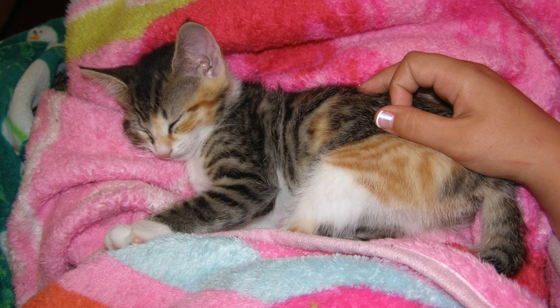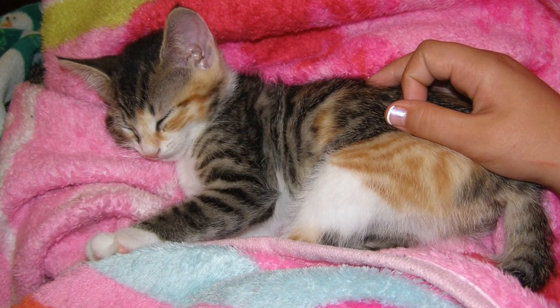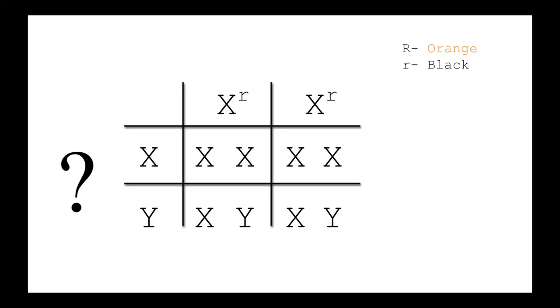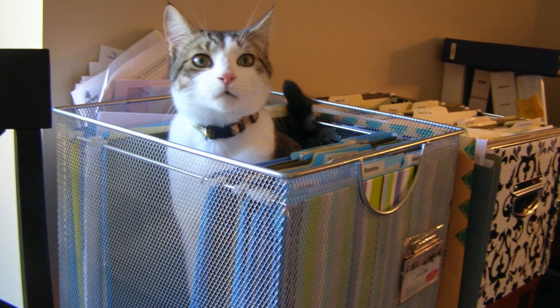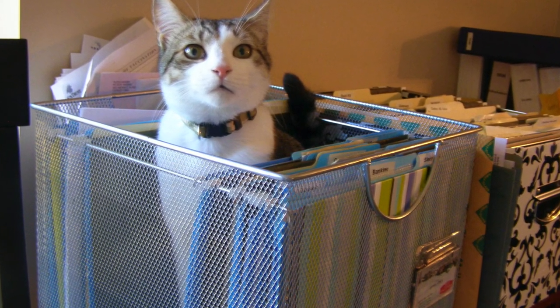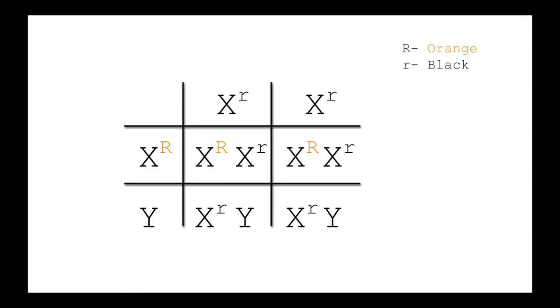Since Mittens must get one allele from mom and one allele from dad, and she has both black and orange, her genotype must be heterozygous, and the dad must have the orange allele. Now, thinking about Rhino's phenotype, we can see that he gets one X chromosome from his mom and then a Y chromosome from his dad, which would mean his genotype has to be little r, Y.